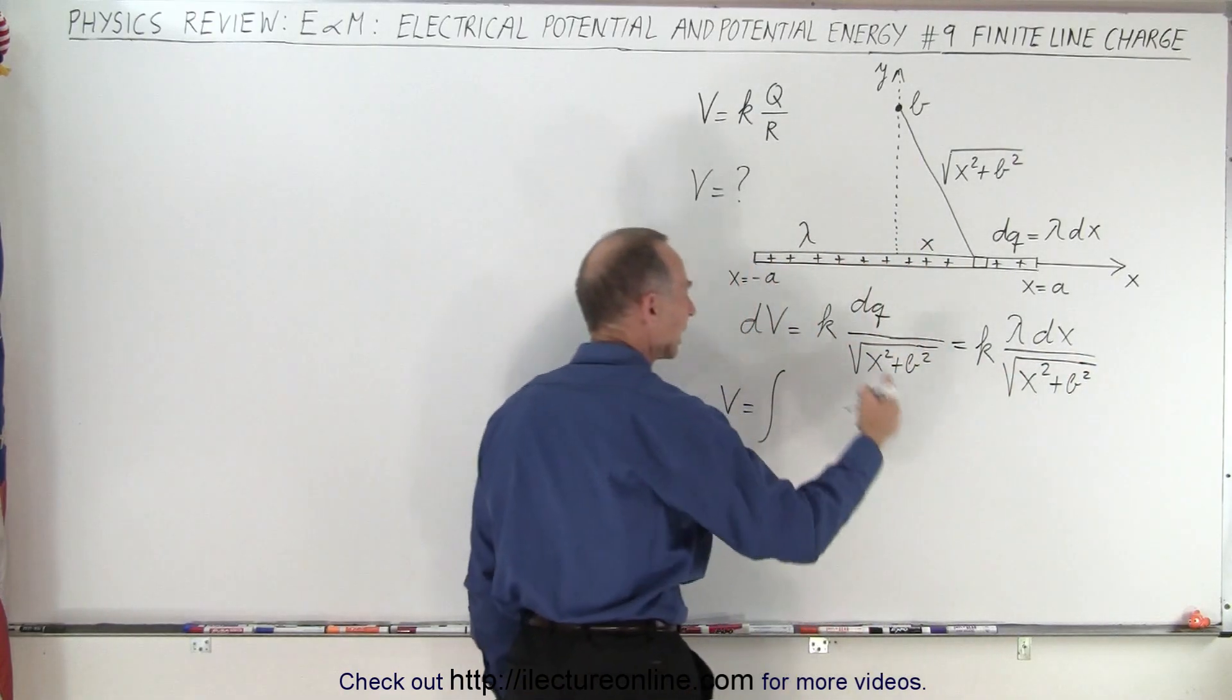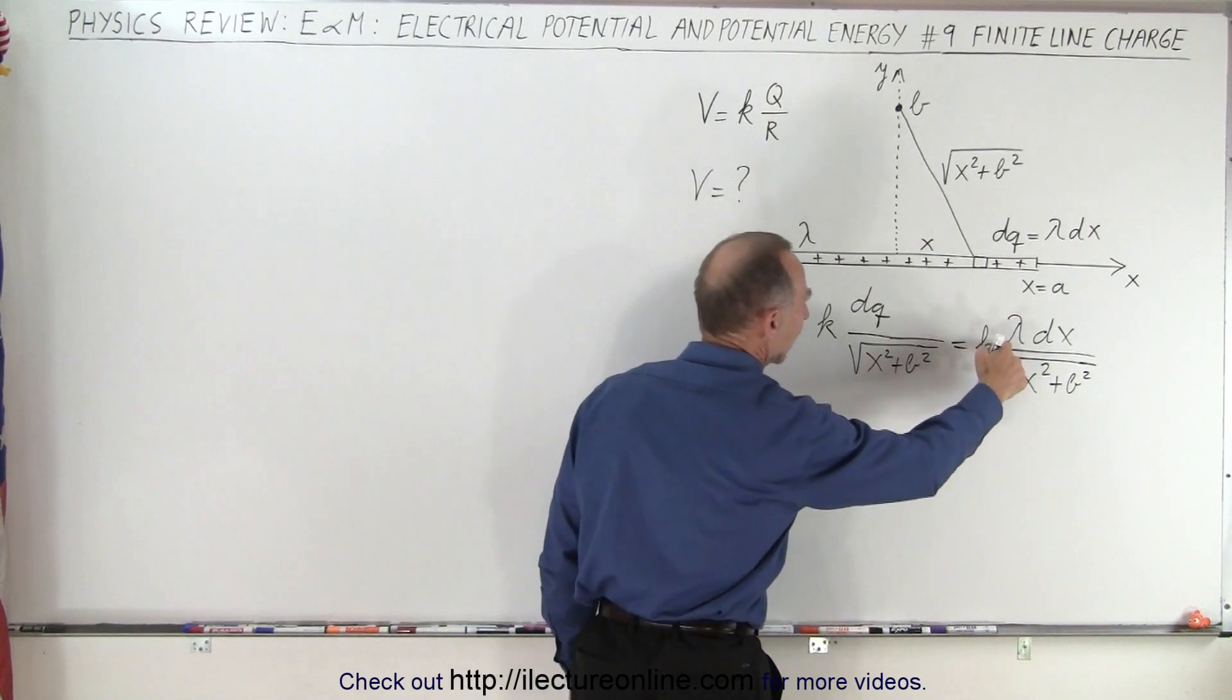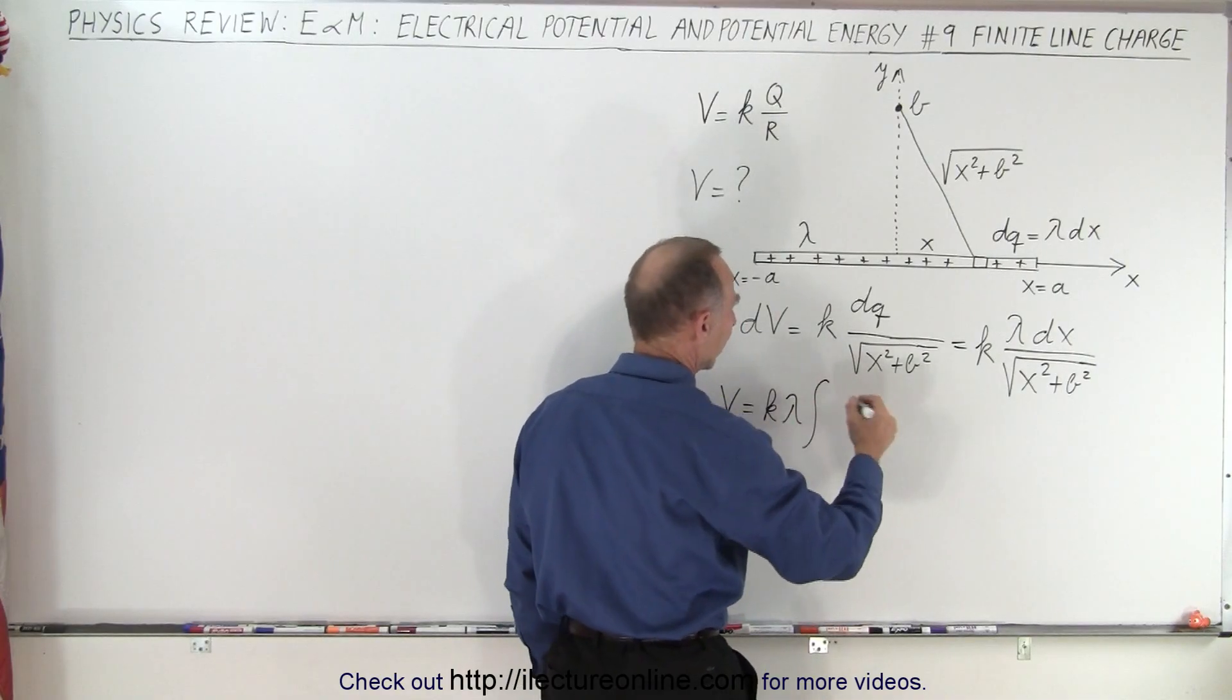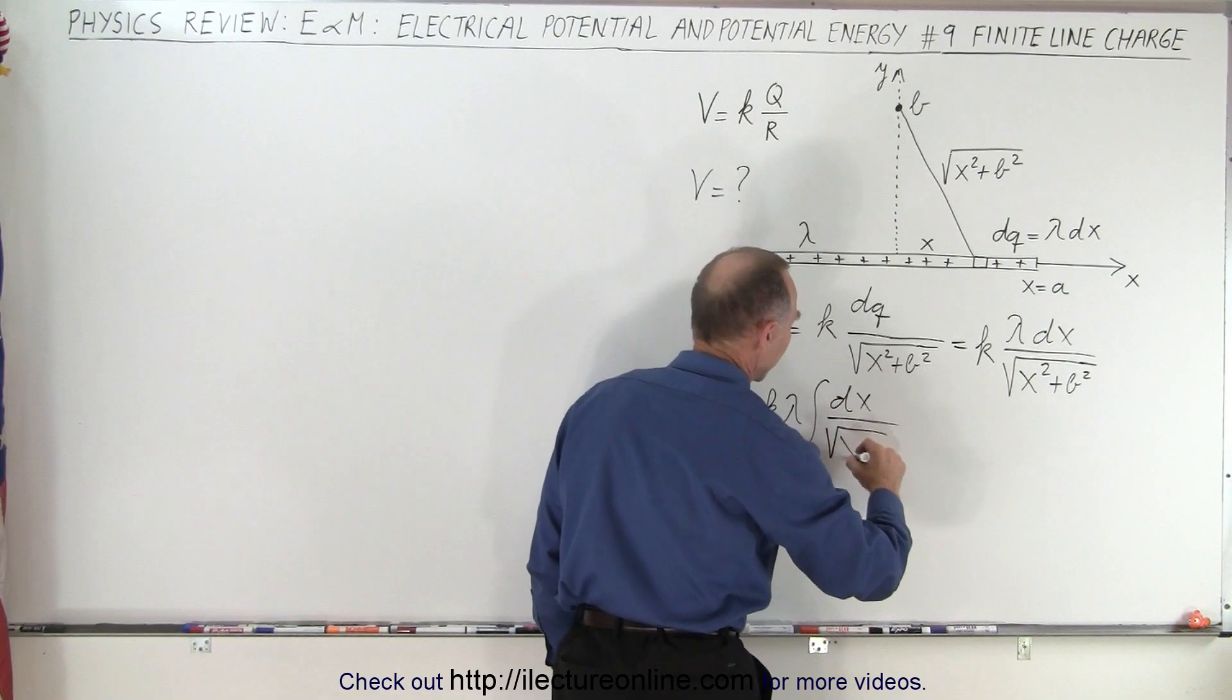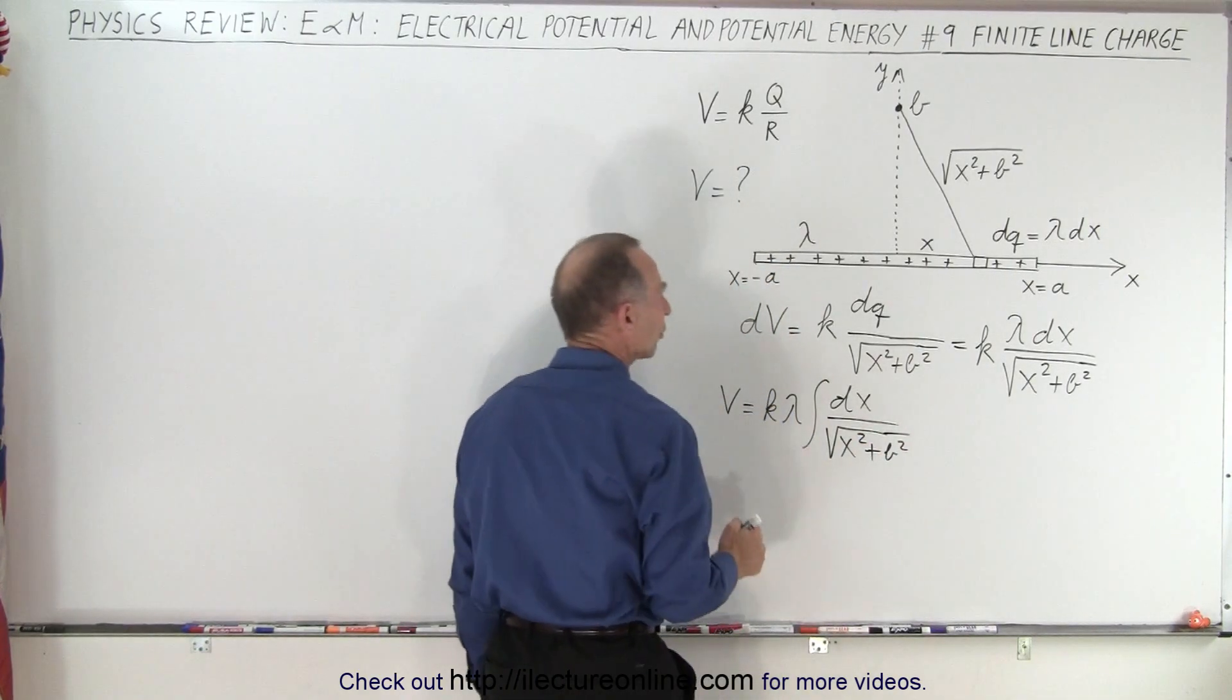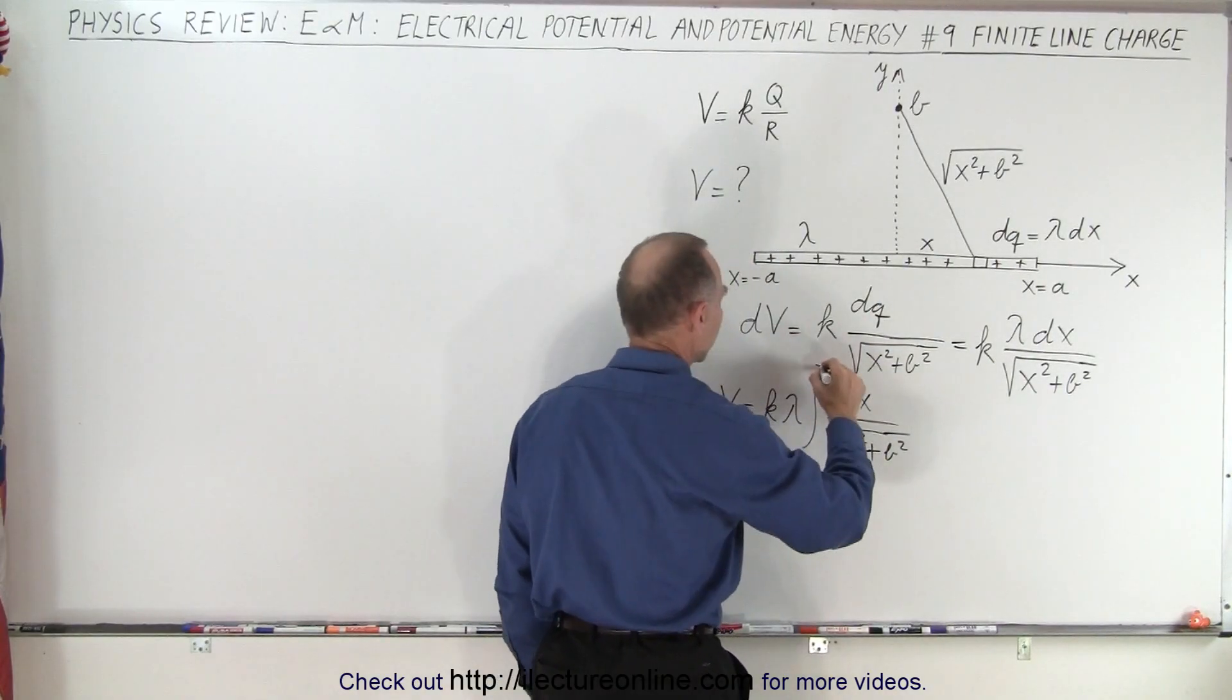So now that we've done that we can take the integral of that and then realize that both k and lambda are constants, so this becomes k times lambda times the integral of what's left, which is dx divided by the square root of x squared plus b squared. And then of course we need to integrate it from minus a to a, so the lower limit minus a, the upper limit is a.